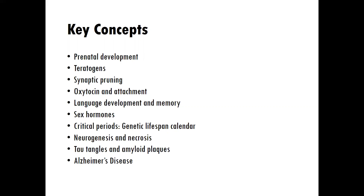Then we'll shift attention and focus on neurogenesis and necrosis — what's happening to our neurons over time. That will lead to a discussion about end of life, talking about tau tangles and amyloid plaques that are present in Alzheimer's disease, and also present in people without Alzheimer's disease. All of us experience these tau tangles and amyloid plaques to some degree.